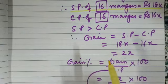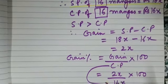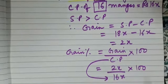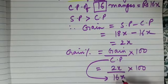This 2x will be the gain. Now we need to calculate gain percent. Gain percent is calculated on the cost price, so gain percent is gain upon CP into 100.